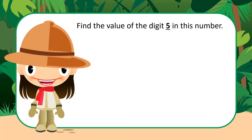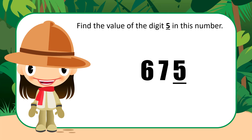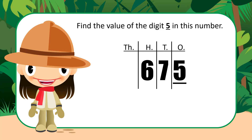Find the value of the digit 5 in this number: 675. You know what we're going to do first? Get those columns up. As we can see, the 5 is in the ones column. So that means that there are 5 ones.